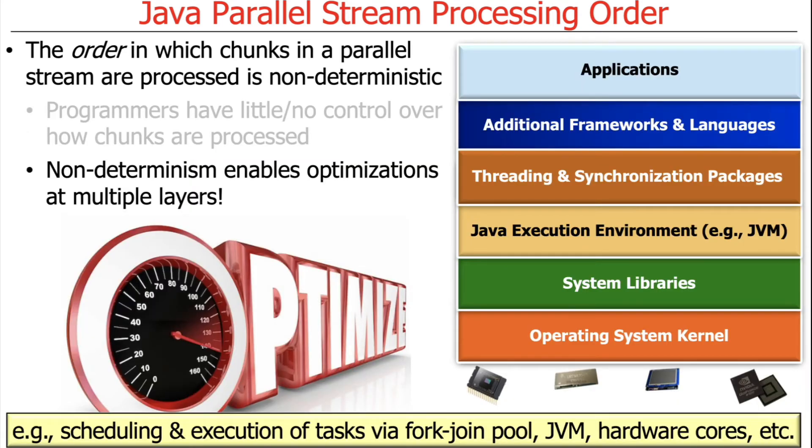To recap, why do we allow this? Because it enables optimizations at different levels. The probably best example is that we talked about how the common fork-join pool supports an optimization technique called work stealing.